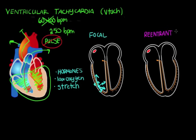In re-entrant VTAC, you have scar formation. A scar is basically a group of dead cells replaced by protein, kind of like a scab. This group of dead cells disrupts normal electrical conduction, so you end up with an electrical current that has to go around this patch of dead cells — around and around. This is a re-entrant circuit. Every time it goes around, it sends a signal out to the ventricular conduction cells, spreading through the ventricles and making them beat rapidly, causing ventricular tachycardia.